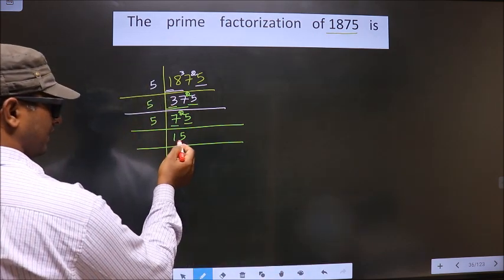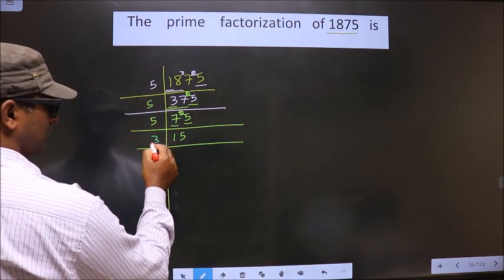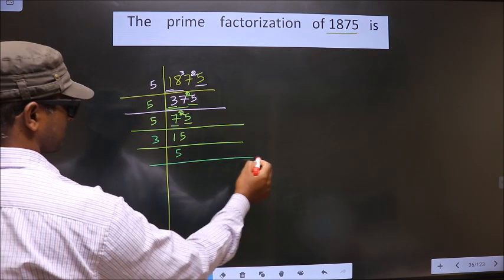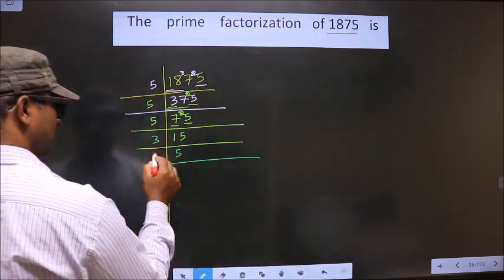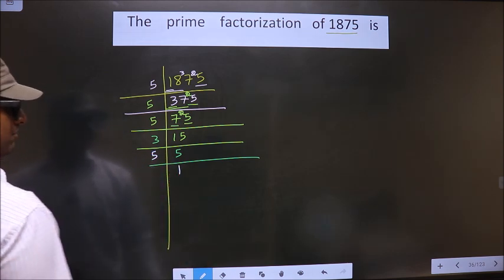Now, 15, it does not go in 2 table, it goes in 3, 3 times 5. Now, 5 is prime, so we take 5 and 1.